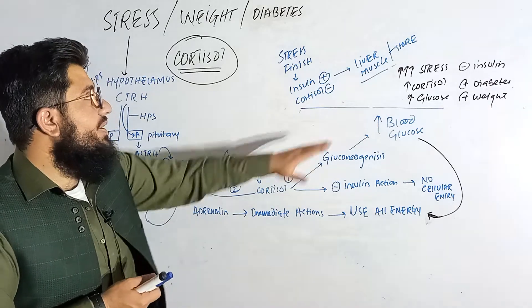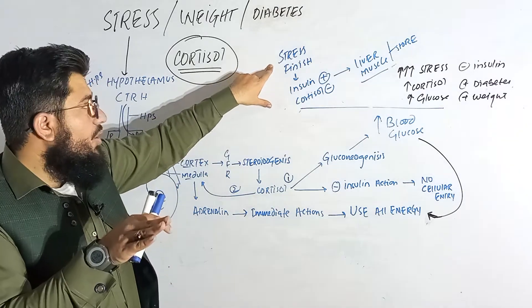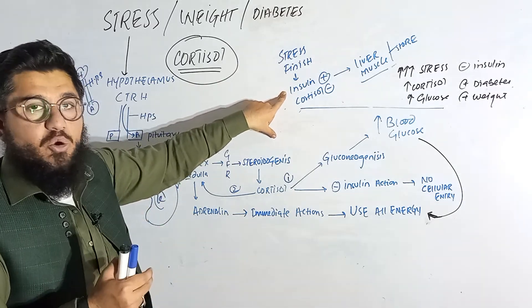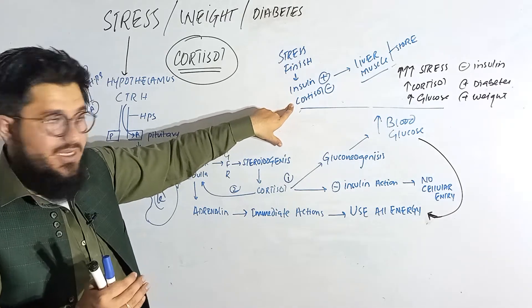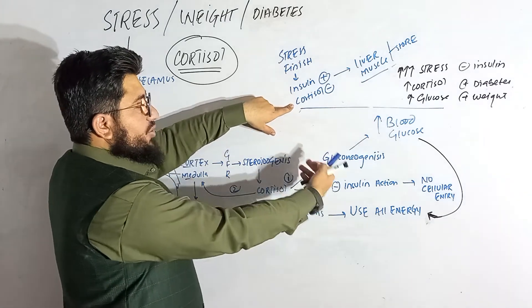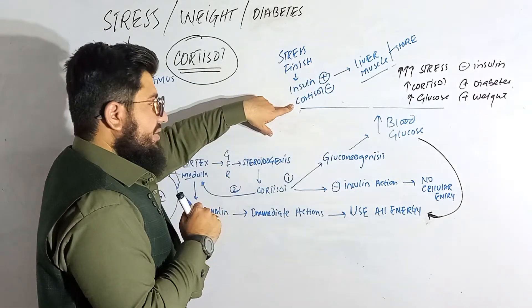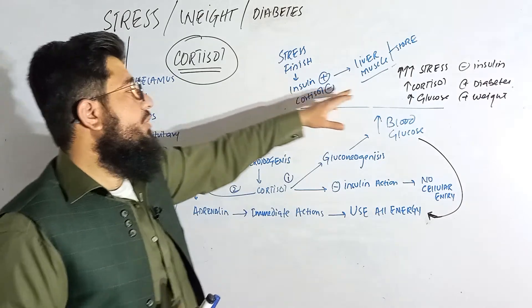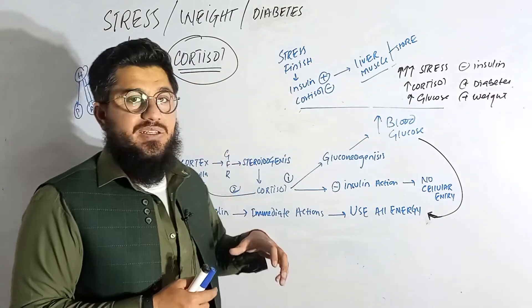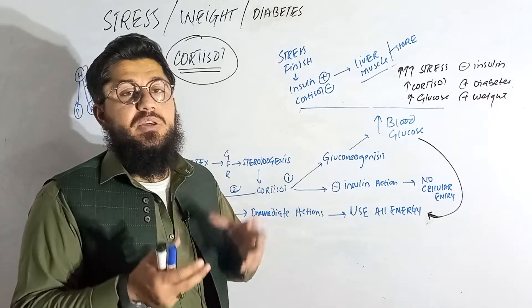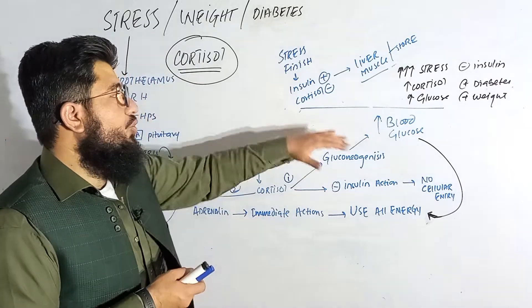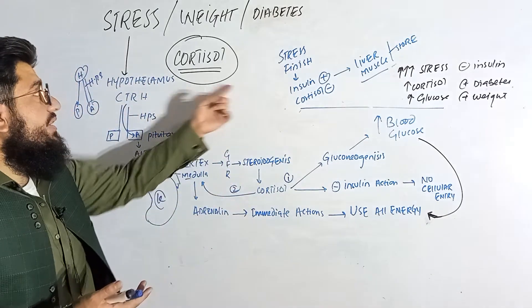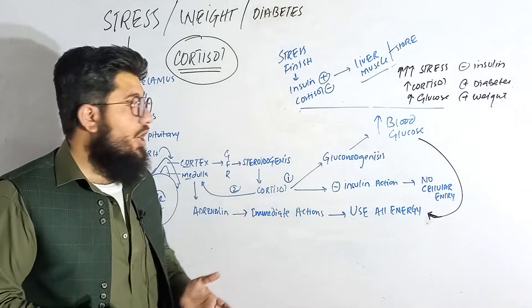Once the stress is finished, insulin will recover its action and will start decreasing the blood glucose level. Cortisol's inhibition of insulin will diminish, and gluconeogenesis will stop. The glucose will start moving back to the liver and muscles where it will be stored and used by cells, so the glucose level will be maintained.